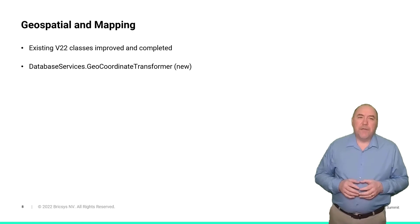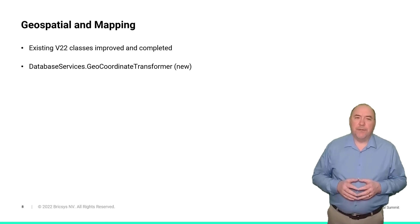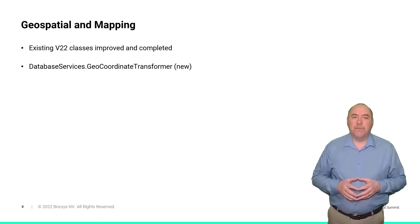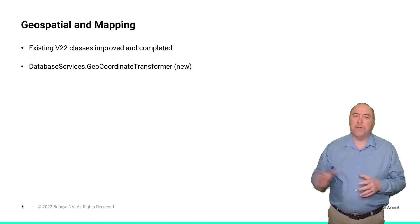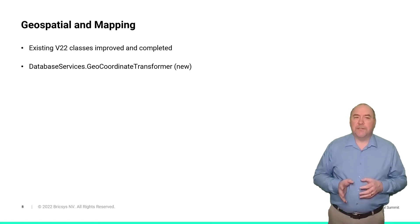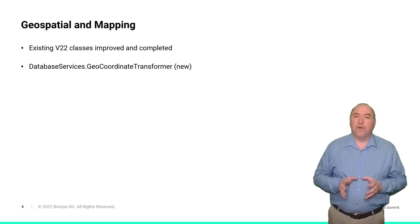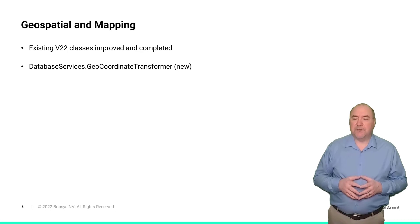We are continuing in version 23 to extend and improve our API support for geolocation, mapping, and geographic coordinate transformation. A lot of this work started in version 22 and it continues in version 23. We see the GIS and mapping market as an important focus area for us, so you can expect more to come in this space.